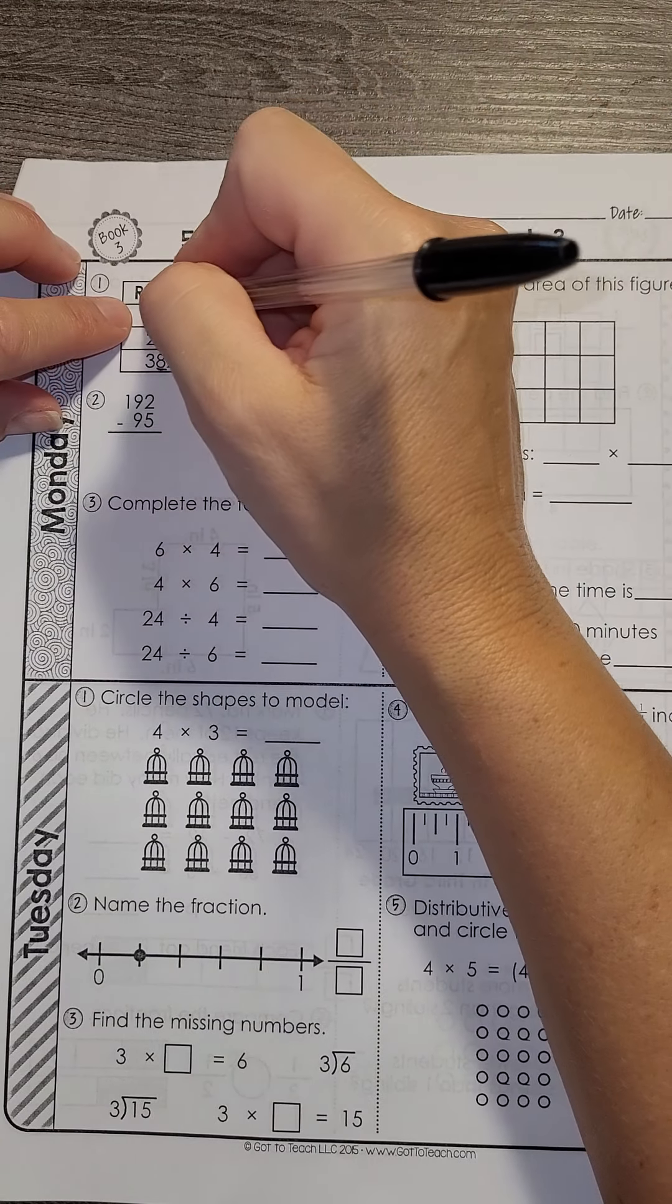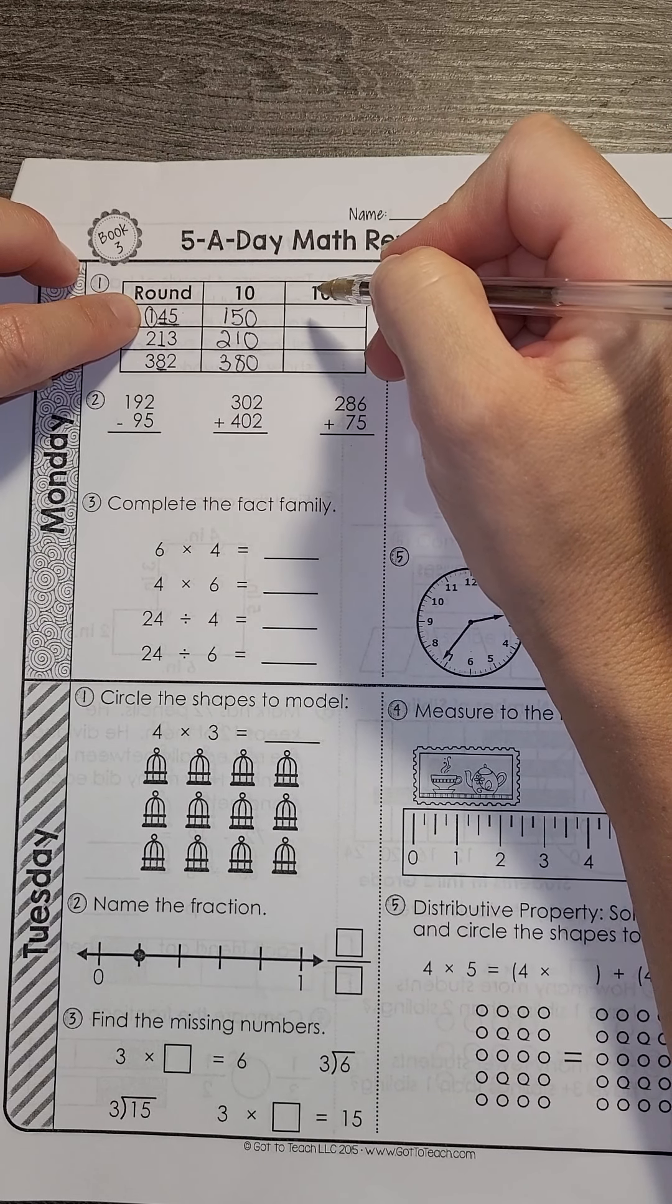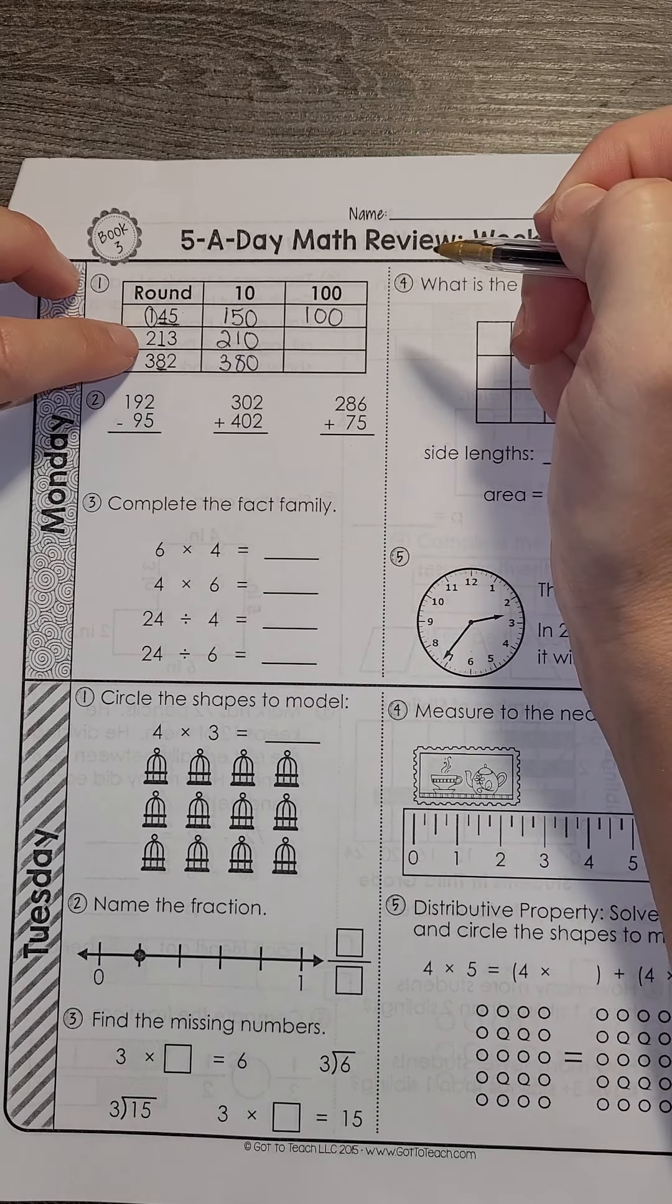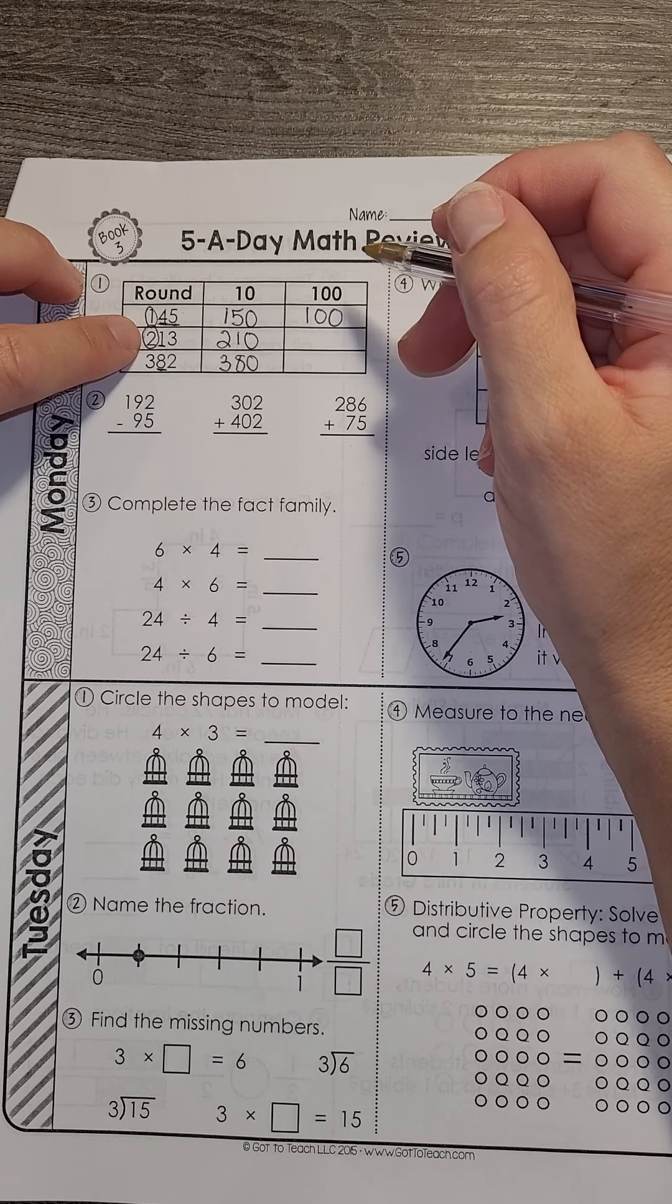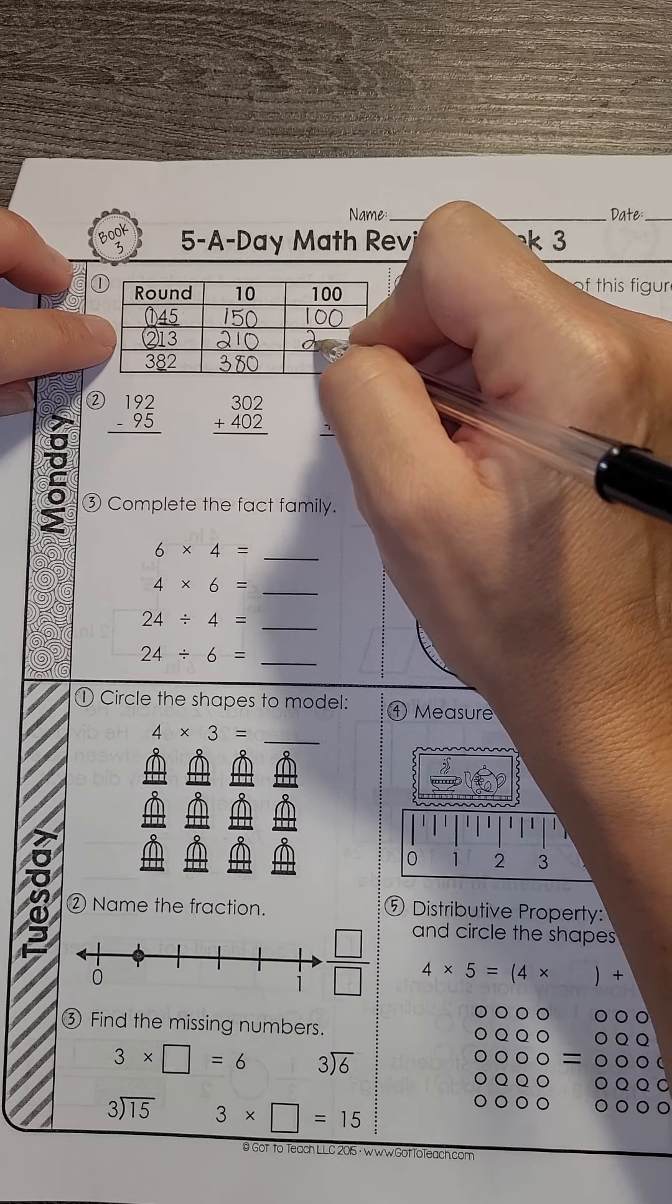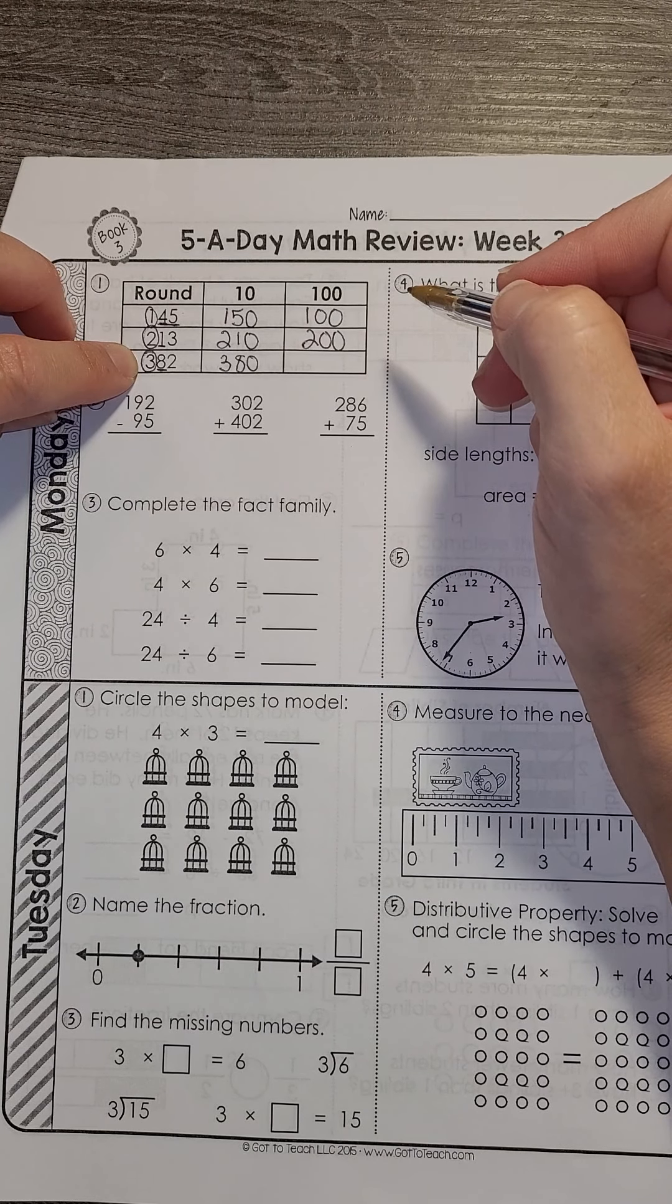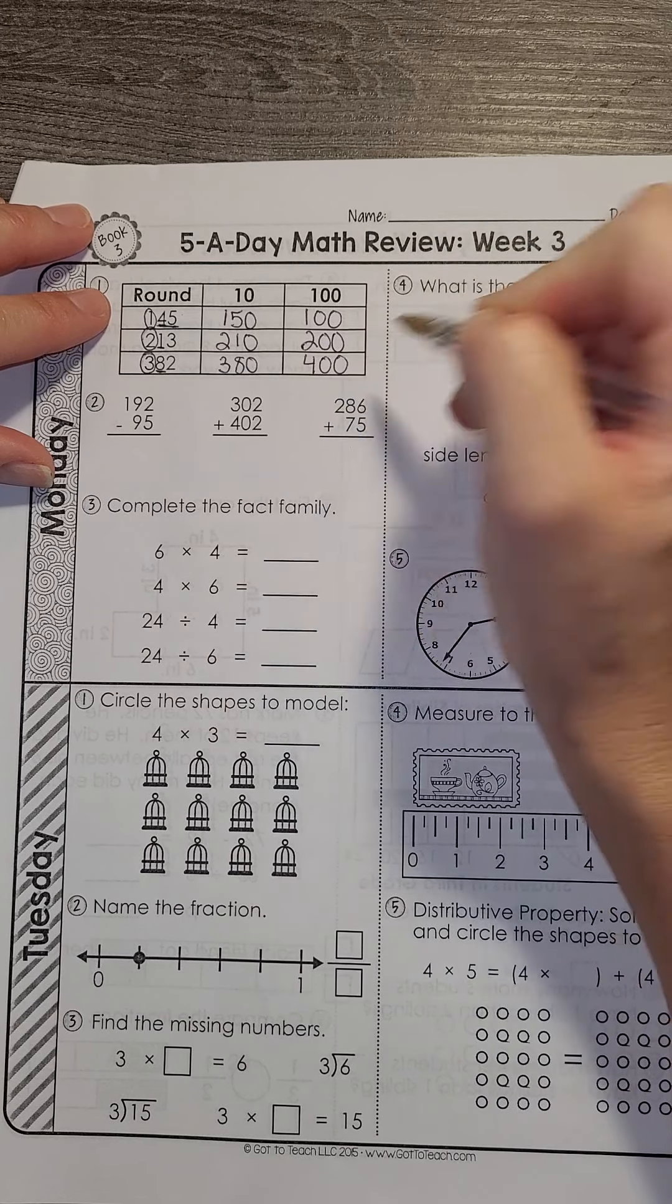Then rounding to the hundreds, now we're going to look at the hundreds place. So I have 145, which is going to fall between 100 and 200. 45 is less than halfway, so I round down to 100. Then we're going to look in the hundreds place for 213. It's going to come between 200 and 300, and 13 is closer to 200, so I round down to 200. And then the last one, I have 382, which is between 300 and 400. 82 is more than halfway, so I round up to 400.